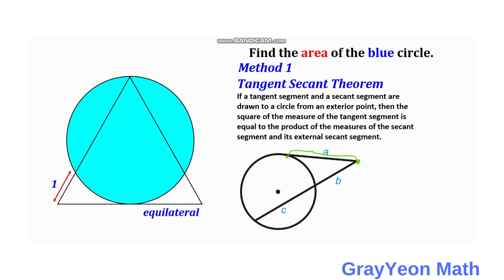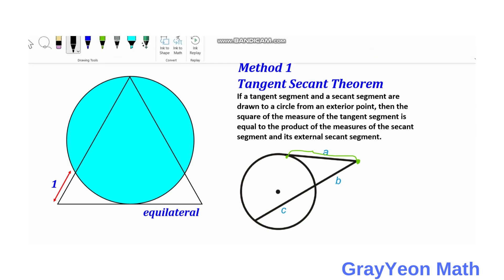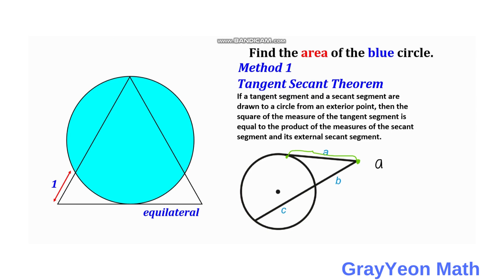So the square of the measure of the tangent segment is equal to a squared. In this illustration, it is equal to the product of the measures of the secant segment — the secant segment is this whole length, b plus c — times the external secant segment, and that is b. So a squared is equal to (b plus c) times b.